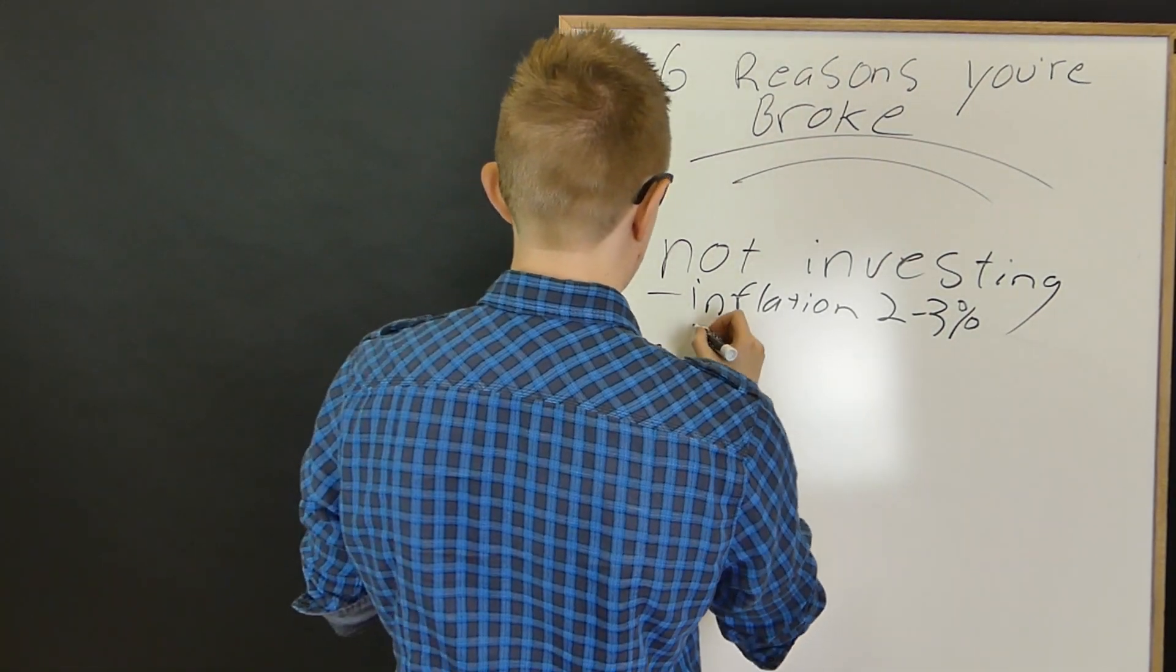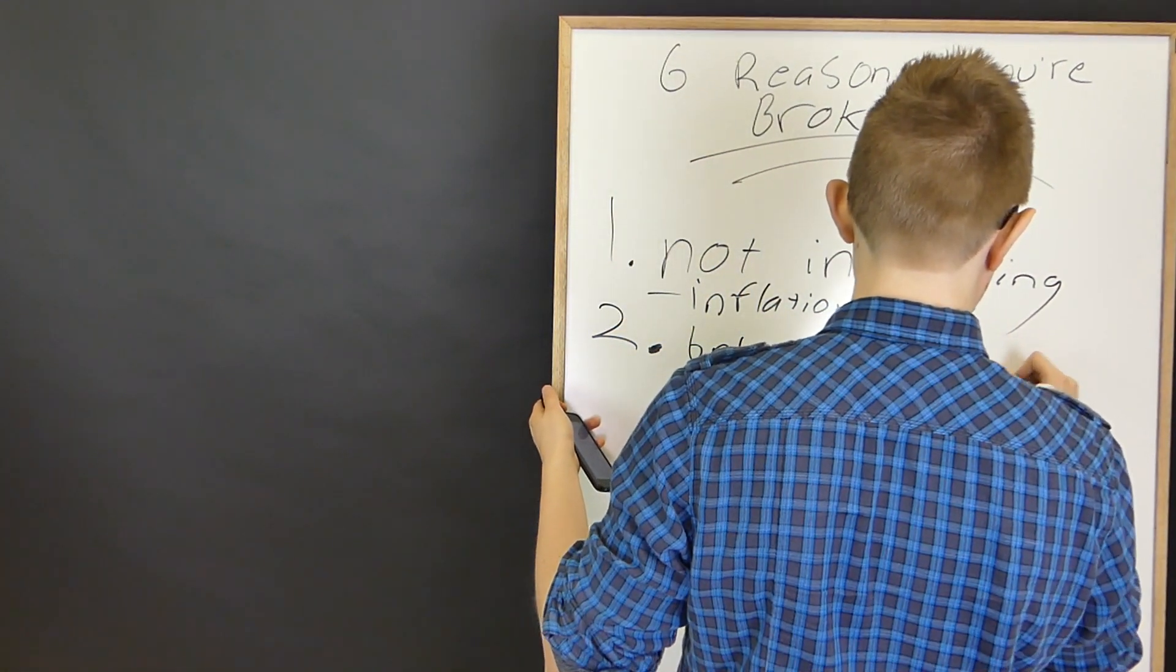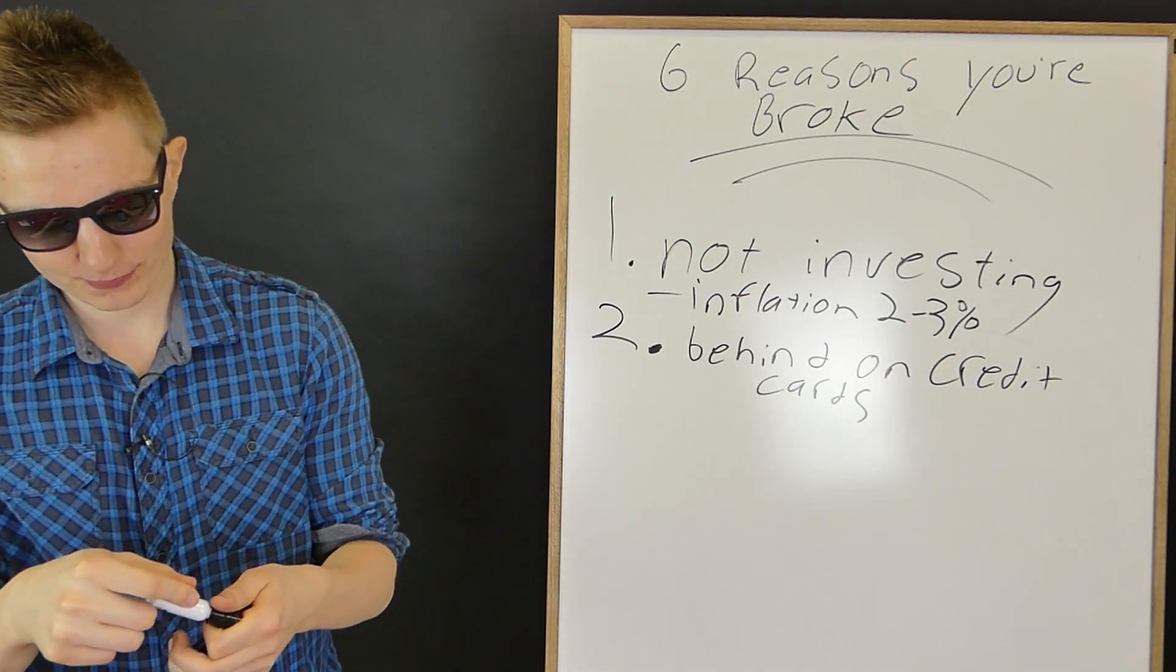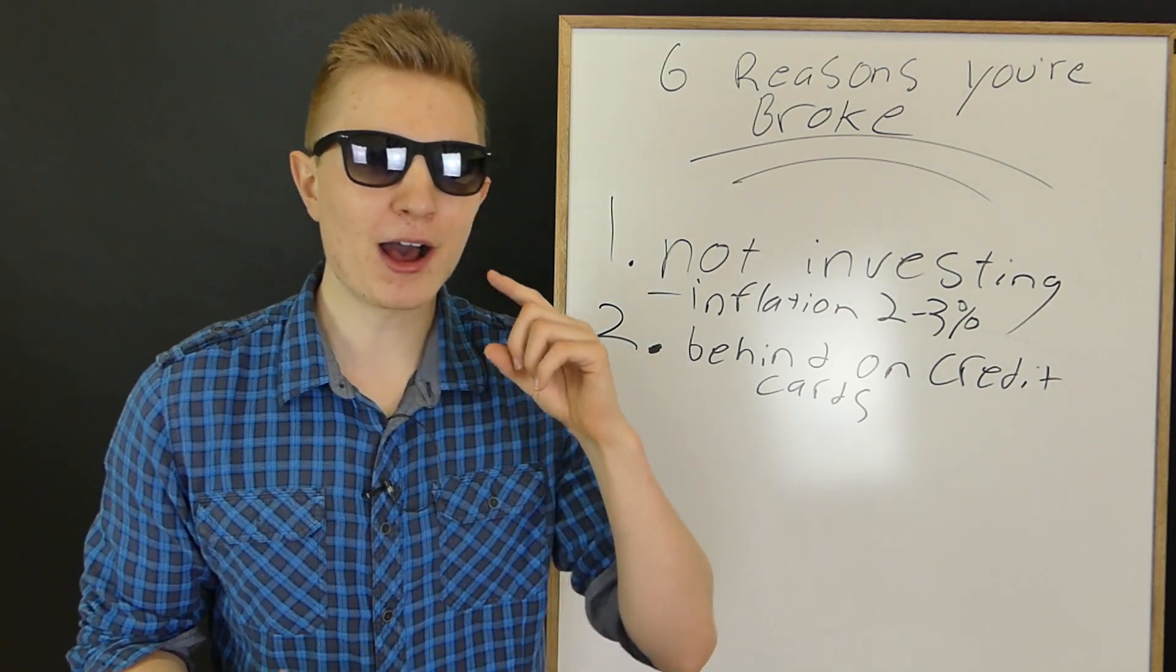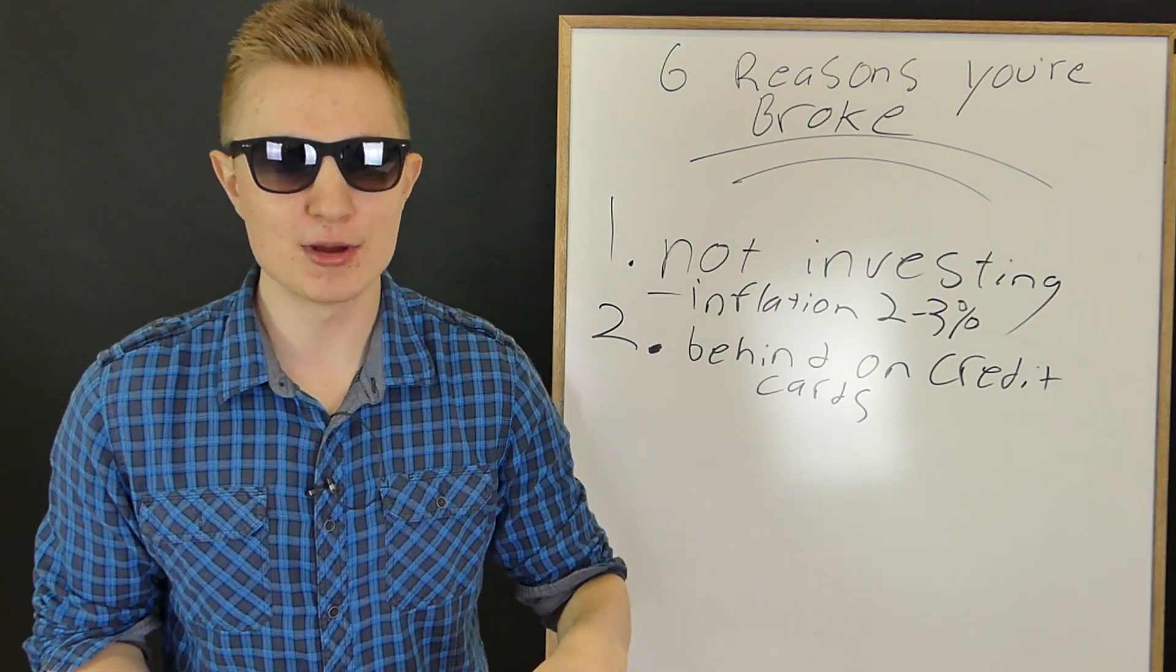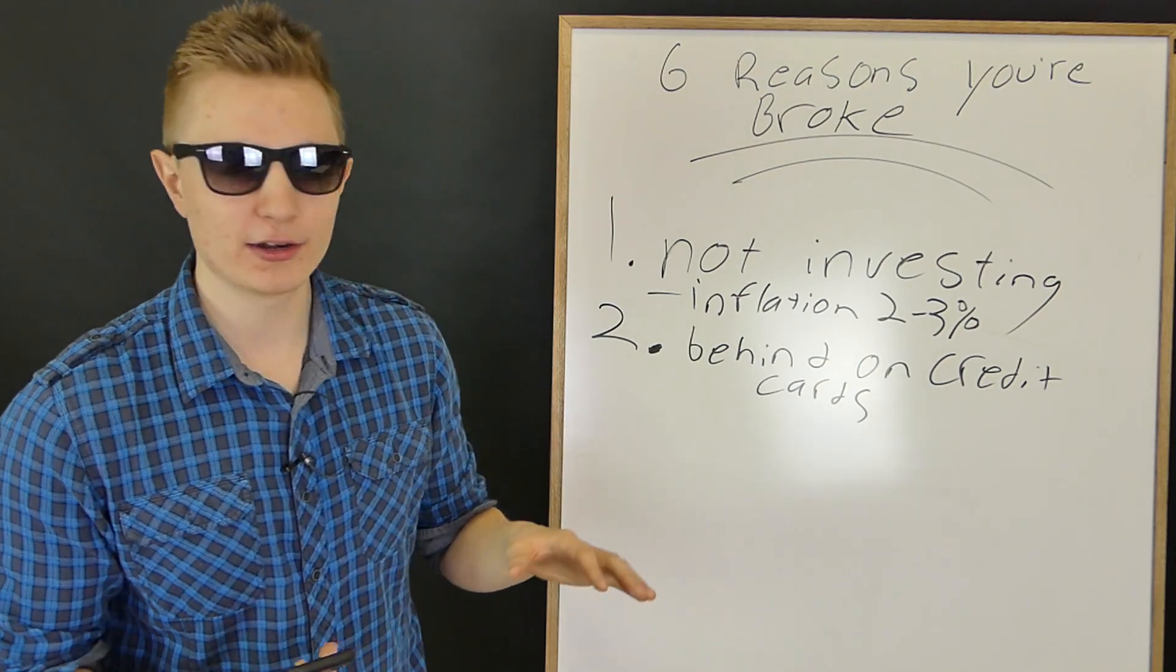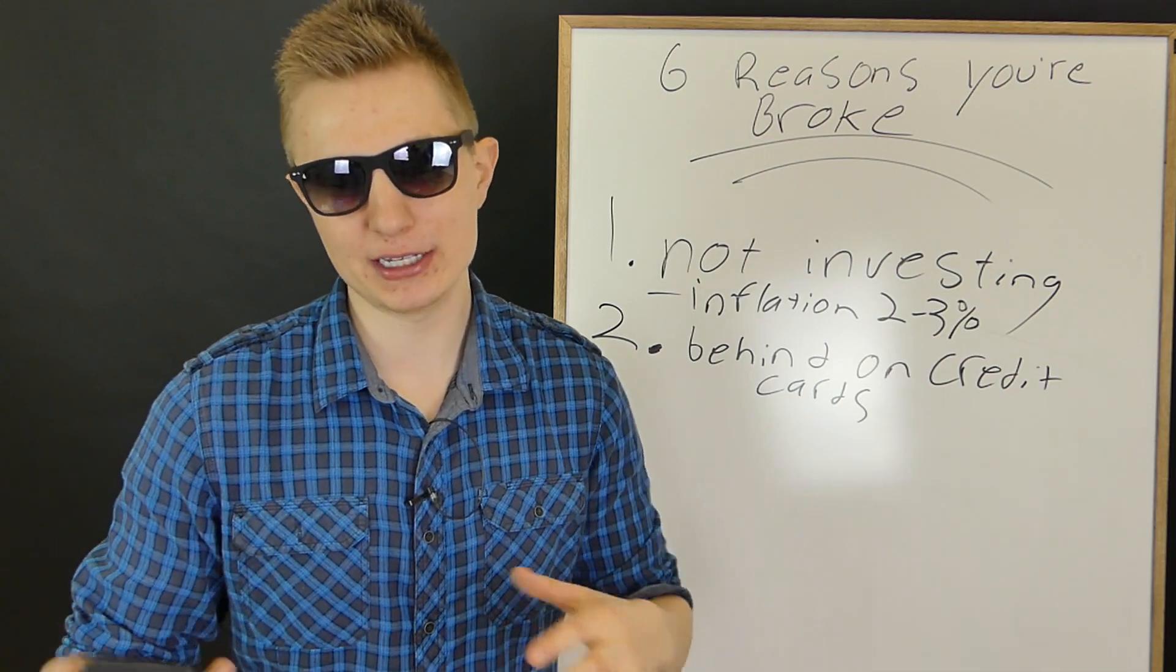Number two, behind on credit cards. This is one of the reasons why you're broke. If you get behind on your credit cards once, sometimes that stuff is out of your control, a lot of the times it is in your control. If you get behind once, you're going to be behind for a very long time. Because if you can't pay it back on the first time, you probably can't pay it back on the second time, and it's going to add up. I've seen cases where you borrow $500 using your credit card. You can't pay that back. Maybe you have an emergency, and you can't pay back your credit card. Over time, you might end up paying back $1,000 on that $500 purchase.